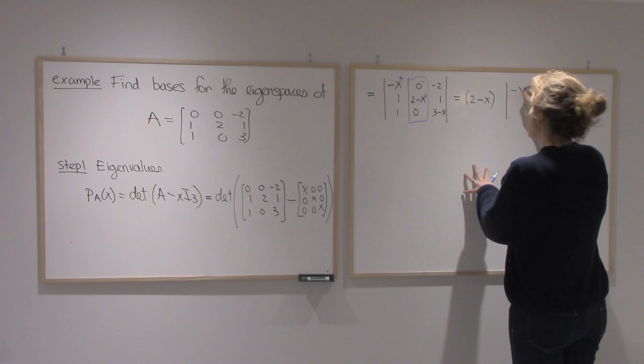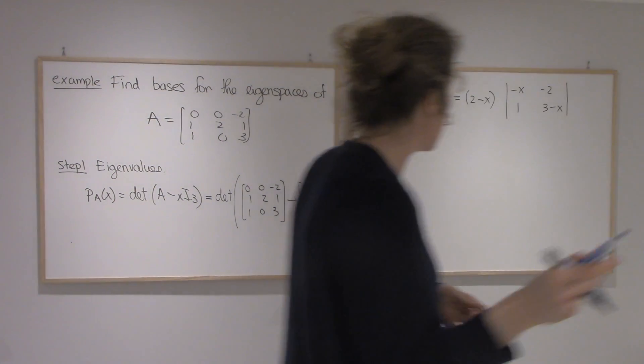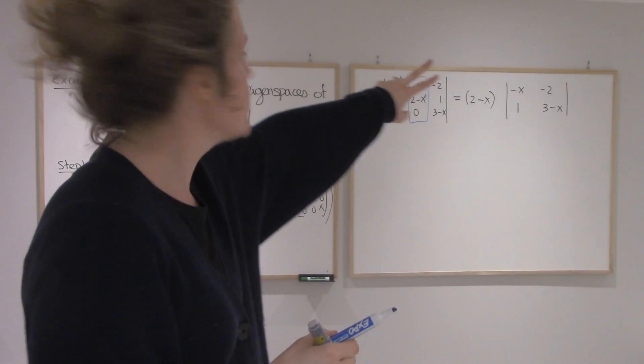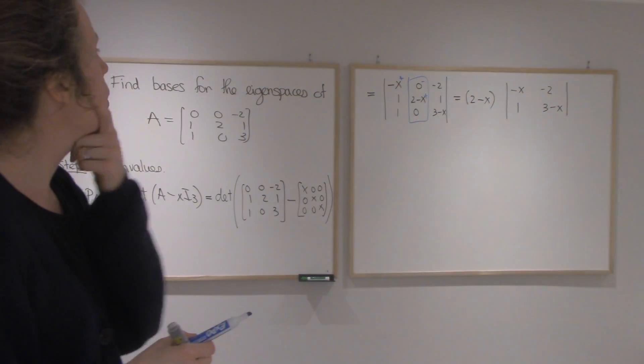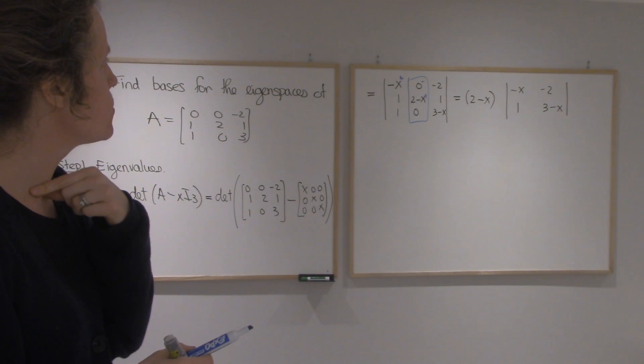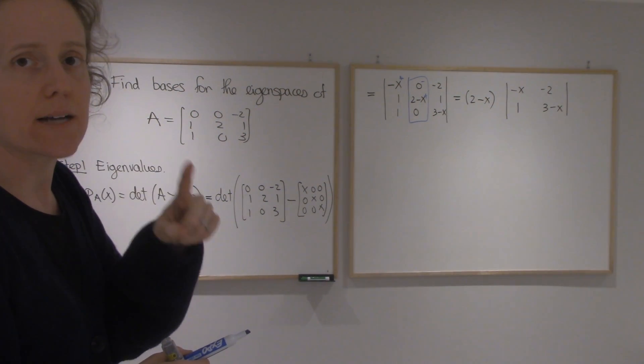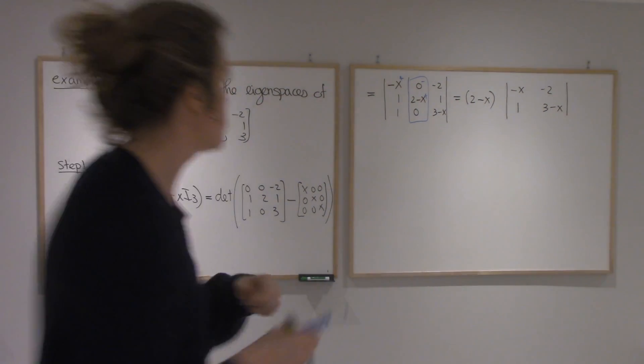Then I have minus x minus 2, 1, 3 minus x. Now this is a bit harder to see, but one thing I notice is if I add those two rows, what happens if I add those two rows? I get 1 minus x and 1 minus x. Let's do that.